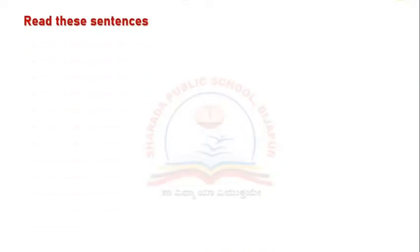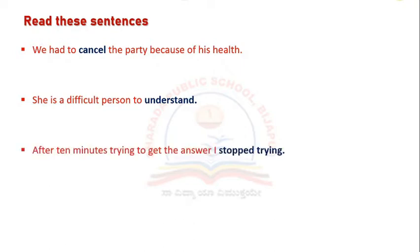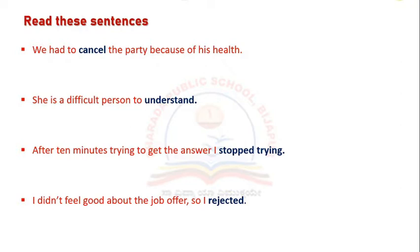Let's read the sentences. We had to cancel the party because of his health. She is a difficult person to understand. After 10 minutes trying to get the answer, I stopped trying. I didn't feel good about the job offer, so I rejected. You can observe some words highlighted in blue in these sentences. They are: cancel, understand, stop trying, rejected.